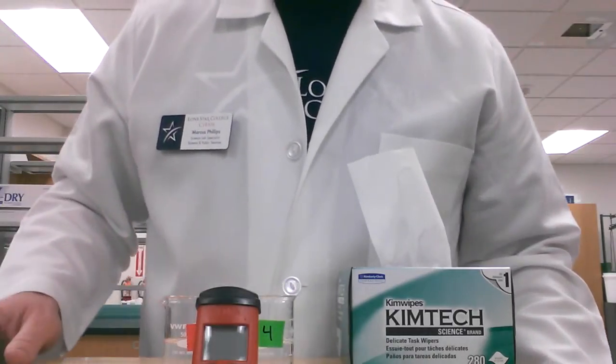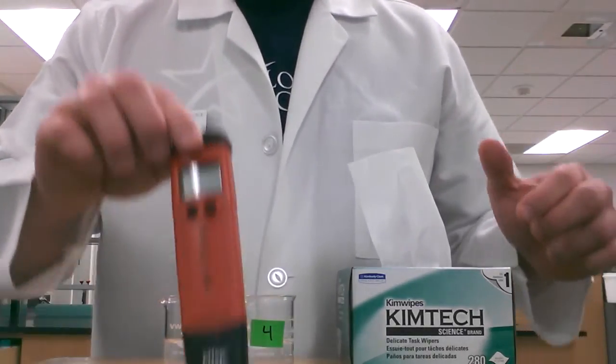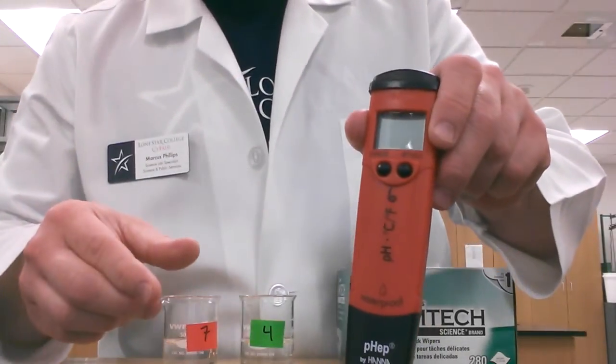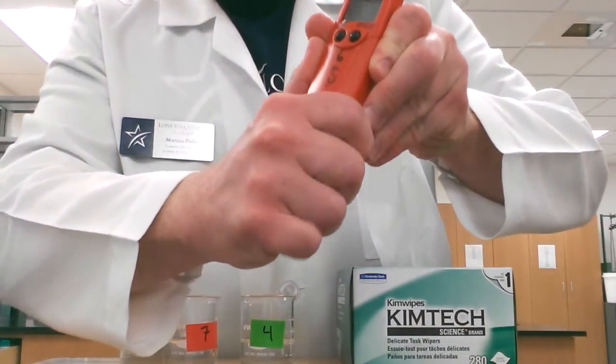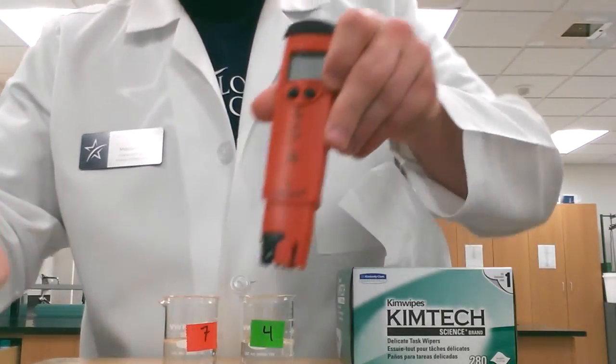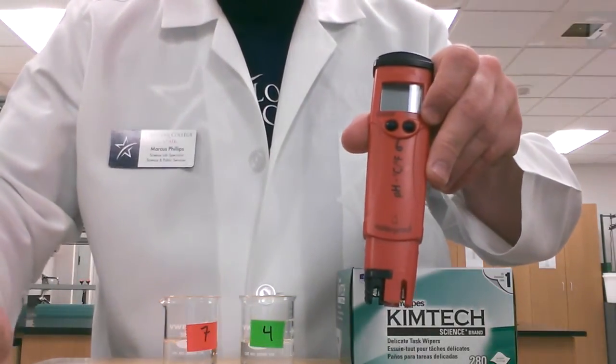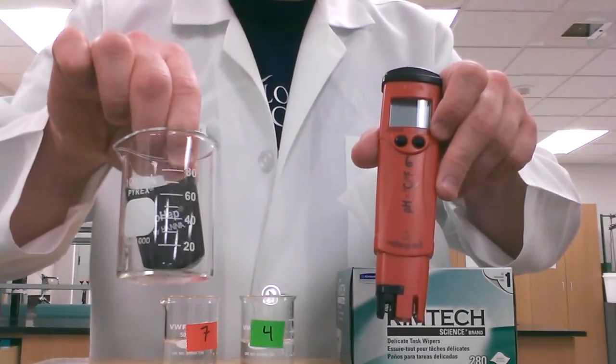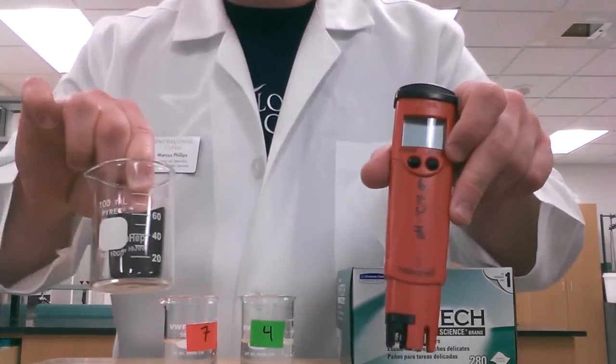So, let's get started. First, we're going to remove the cap from the pH meter, and we're going to set that cap inside of our 100 ml beaker so we don't lose that or spill the solution that's inside.